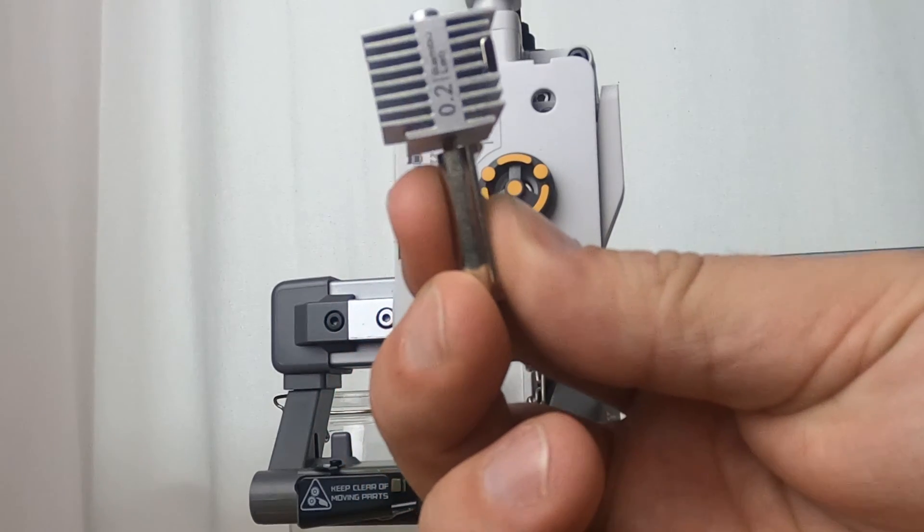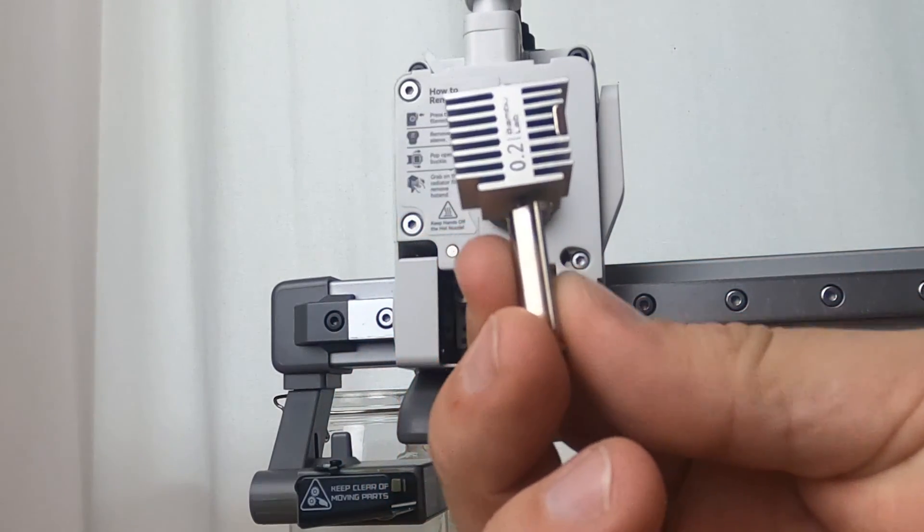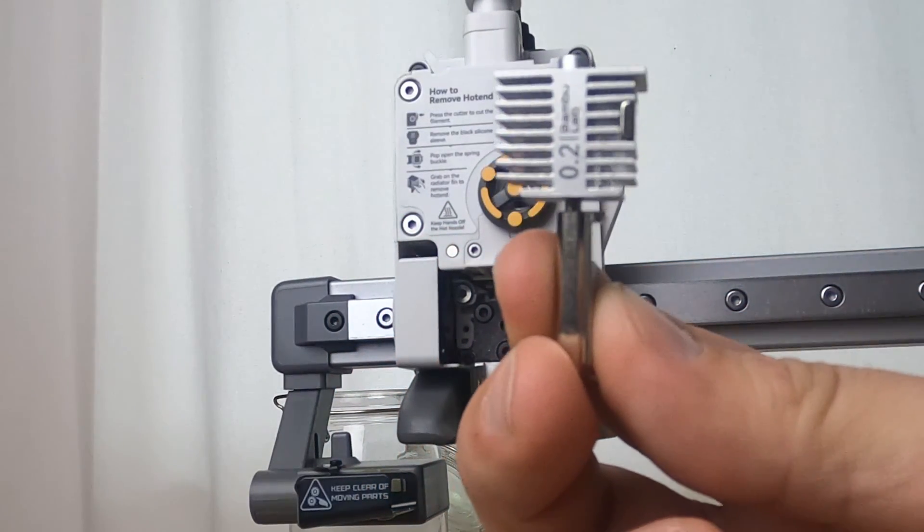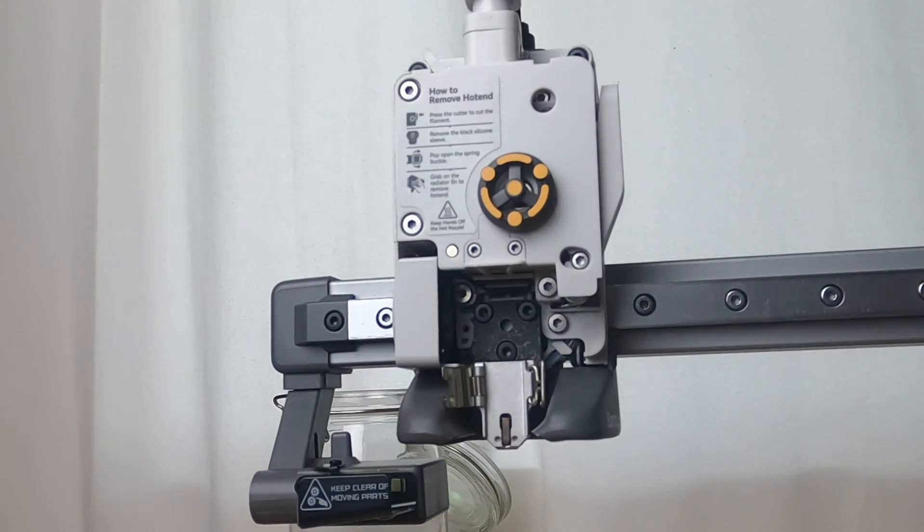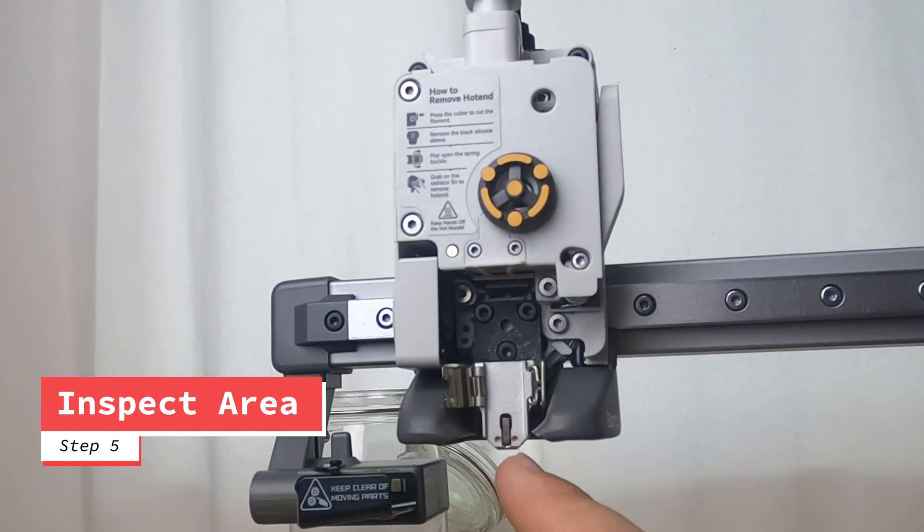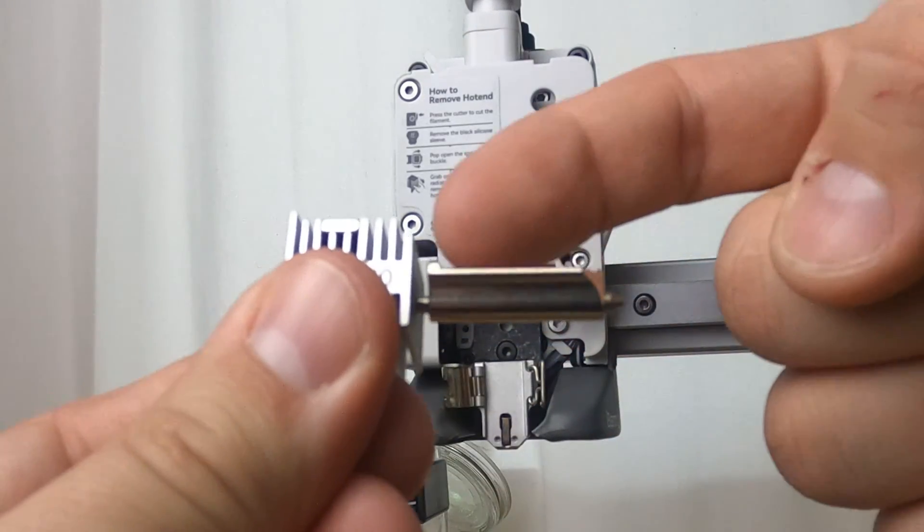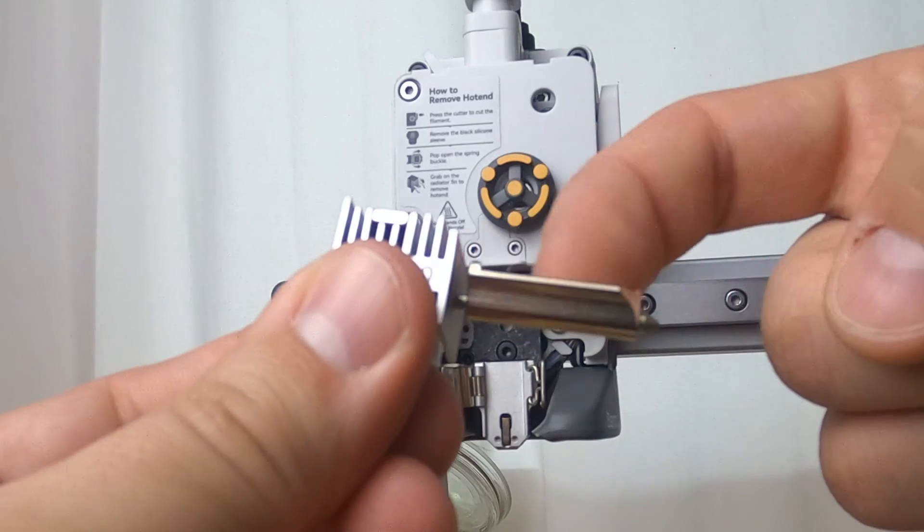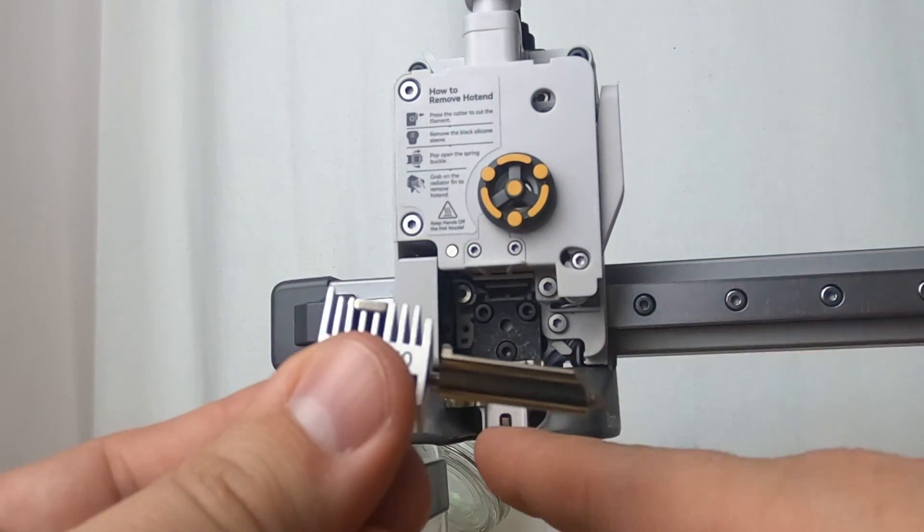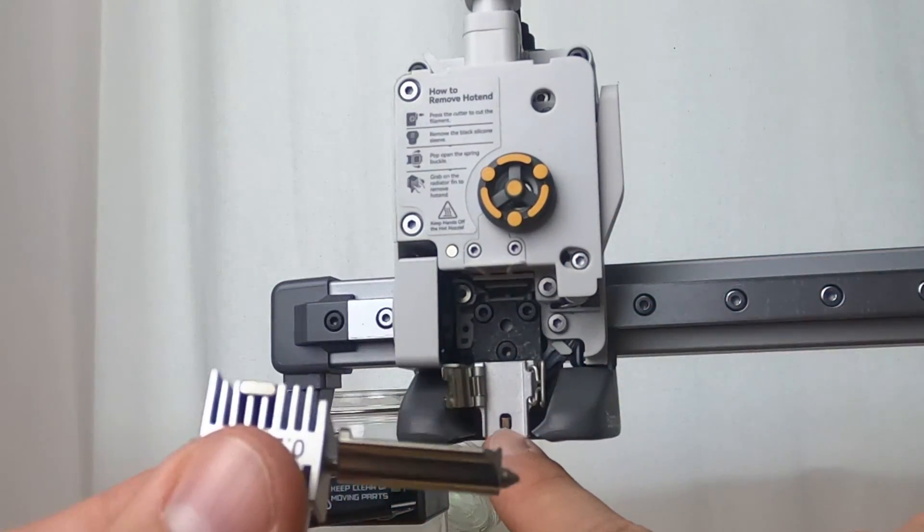And today I'm going to replace my nozzle with a Bamboo Lab 0.2 nozzle. But before we do that, we're going to closely inspect the thermistor to make sure that there's no debris here, because on the hot end it's got a little concave section here that needs to sit directly against this part of the hot end.